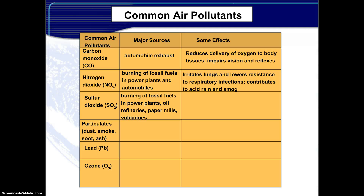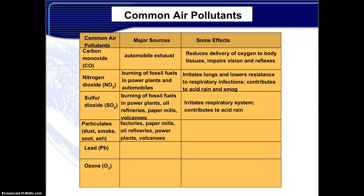The major source of sulfur dioxide is burning fossil fuels in power plants, oil refineries, paper mills, and volcanoes. Some effects include irritation of the respiratory system and contribution to acid rain. Particulates, such as dust, smoke, soot, and ash, have major sources including factories, paper mills, oil refineries, power plants, and volcanoes. This contributes to respiratory problems linked to some cancers.